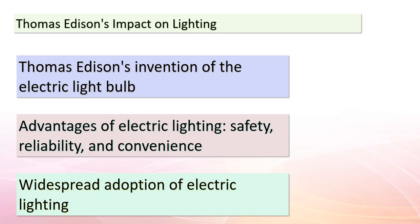Let's focus on Thomas Edison, who shaped the course of history with his innovative spirit. In 1879, Edison unveiled his groundbreaking invention — the electric light bulb. This invention was a beacon of progress, offering a safer, more reliable, and convenient alternative to the limelight. Its impact was profound, leading to the widespread adoption of electric lighting in various industries and urban landscapes. Edison's light bulb truly illuminated a path to a brighter future, and every innovation is fueled by the intricate dance of energy and chemical reactions.